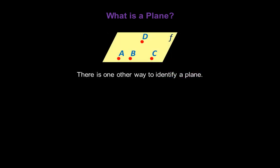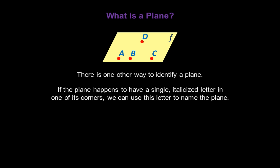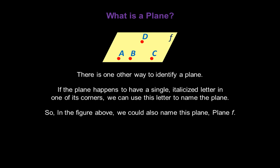Now there's one other way to identify a plane. If a plane happens to have a single italicized letter in one of its corners, like ours does, we can use this letter to name the plane. So in our figure above, we could also name this plane F.